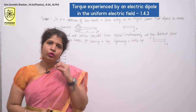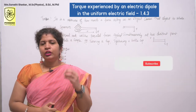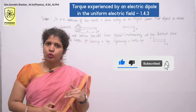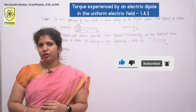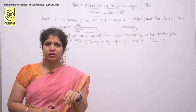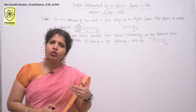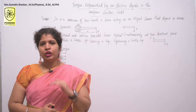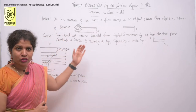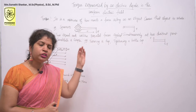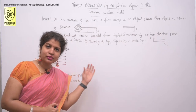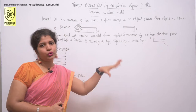Before going into this topic, you have to recall two important terms: torque and couple. Torque is a twist or turning force on an object. Torque is a measure of how much a force acting on an object causes that object to rotate.